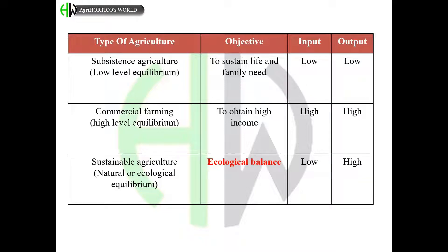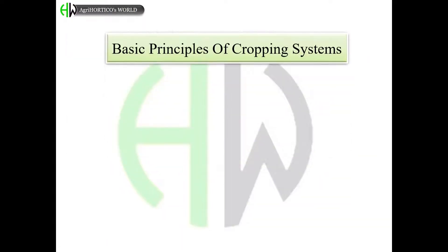Here are some types of agriculture. Subsistence type of agriculture has low-level equilibrium; its objective is to sustain life with high input and output. Sustainable type of agriculture is related to natural or ecological equilibrium; its objective is to maintain ecological balance with low input and high output.